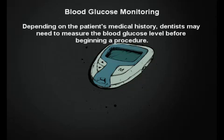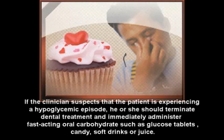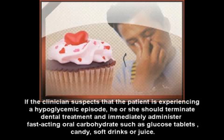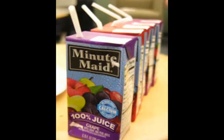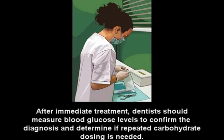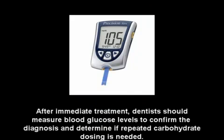Depending on the patient's medical history, dentists may need to measure the blood glucose level before beginning a procedure. If the clinician suspects that a patient is experiencing a hypoglycemic episode, he or she should terminate dental treatment immediately and administer a fast-acting oral carbohydrate such as glucose tablets, candy, soft drinks, or juice. After immediate treatment, dentists should measure blood glucose levels to confirm the diagnosis and determine if repeated carbohydrate dosing is needed.